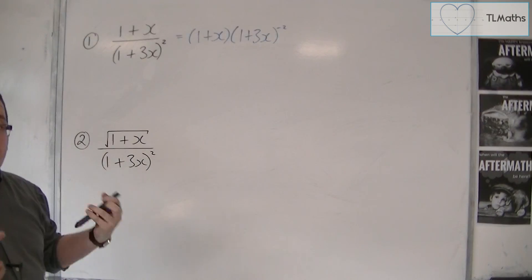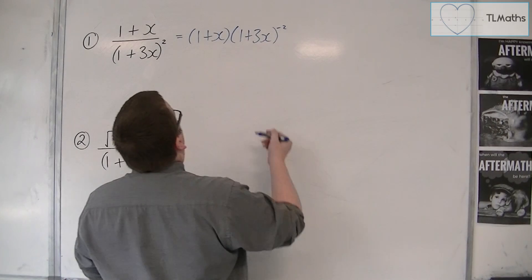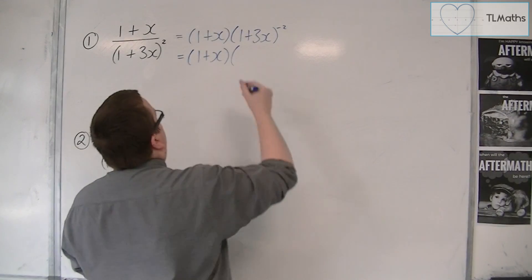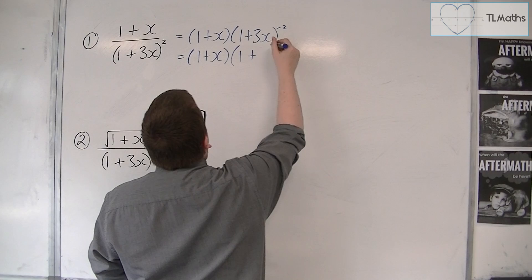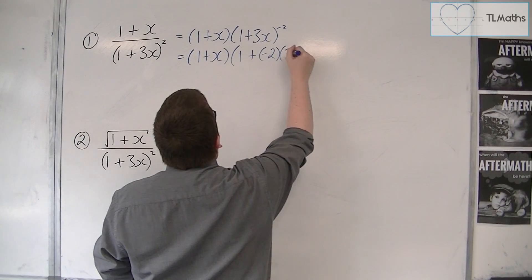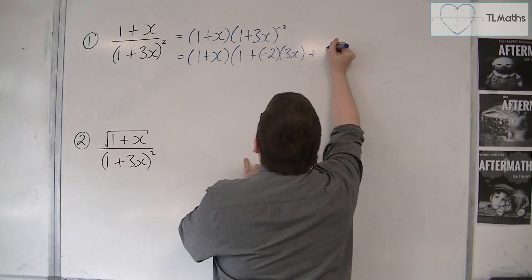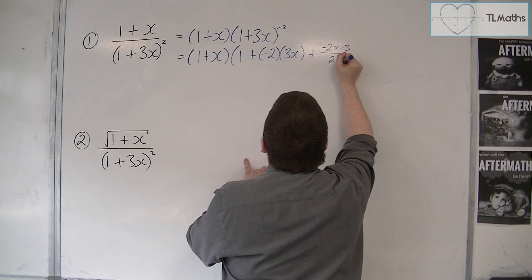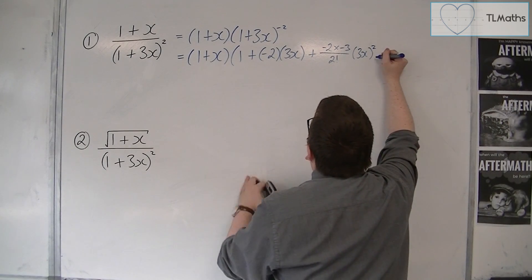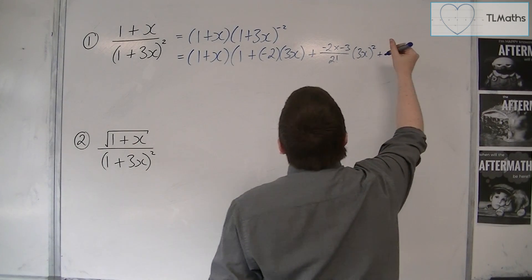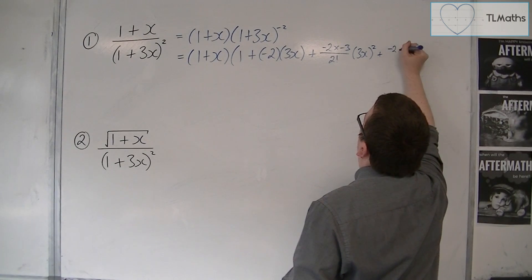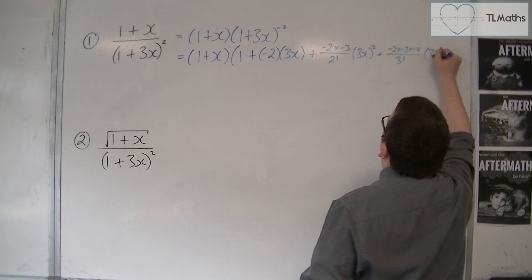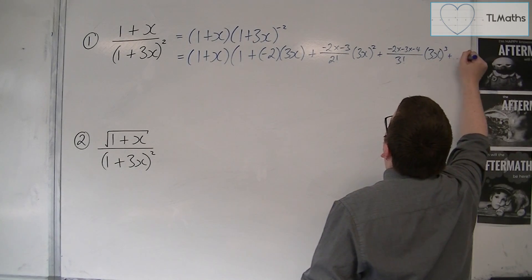The (1 + 3x)^(−2) we can expand using the formula. So this would be equal to (1 + x) times: we're going to do one plus n times x, so minus two times 3x, plus n times (n − 1) over two factorial, so minus two times minus three over two factorial, times (3x)^2, plus minus two times minus three times minus four over three factorial times (3x)^3, and then you'd have other terms.